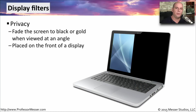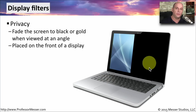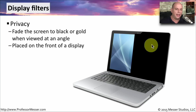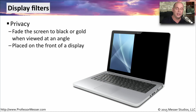If you have a laptop computer, you may want to take advantage of some display filters. One common filter, especially when traveling, is a privacy filter. You put the filter over the display and you're not able to view it unless you are directly in front of it. If you're off to the side, you'll see either a completely black or gold color depending on the filter you use. This is very common on planes, where you can sit right next to someone and not see anything on their display.